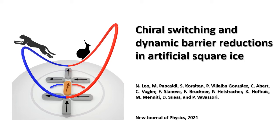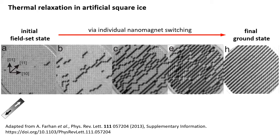Welcome to the video abstract of our paper entitled Chiral Switching and Dynamic Barrier Reductions in Artificial Square Ice. Artificial spin ices consist of single-domain nanomagnets arranged in a periodic manner, for example on a square lattice.